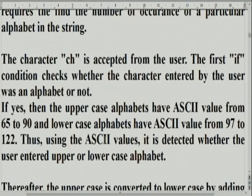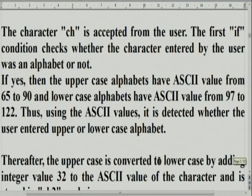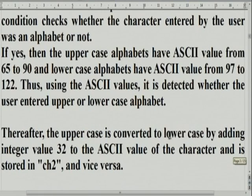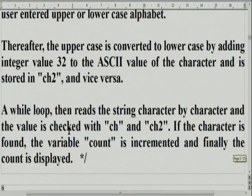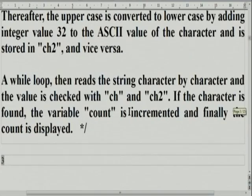Using the ASCII values, it is detected whether the user entered an upper or lowercase alphabet. Thereafter, uppercase is converted to lowercase by adding integer value 32 to the ASCII value of the character, stored in CH2, or vice versa. A while loop then reads the string character by character, and the value is checked against CH and CH2. If the character is found, the variable count is incremented, and finally the count is displayed. Let us look at the way the solution is made.